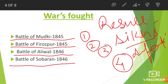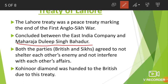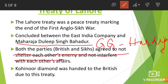The Treaty of Lahore was signed between Maharaja Dalip Singh Bahadur representing the Sikh Empire, and the Governor General of the Britishers, Hardinge. Both parties agreed not to shelter each other's enemy and not to interfere with each other's affairs. This was also the treaty due to which the Kohinoor diamond was handed over to the Britishers — that is how the Kohinoor diamond came into the hands of the Britishers.